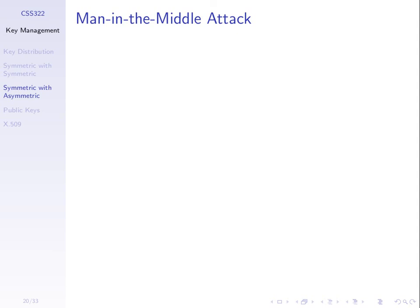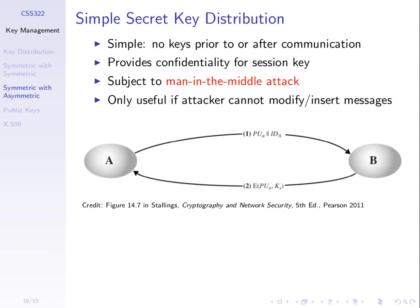Do a man-in-the-middle attack so that you, as the attacker, find the session key, and A and B don't know you have it. A successful attack means an imposter between A and B can learn KS without A and B knowing. We've done it similarly with Diffie-Hellman in the past, but you can do it more generally here for any public key algorithm.